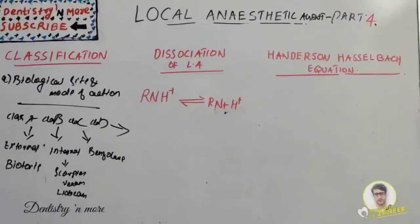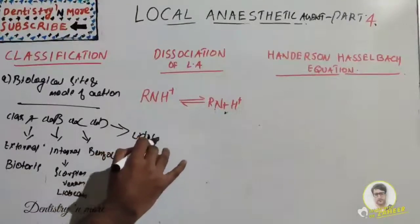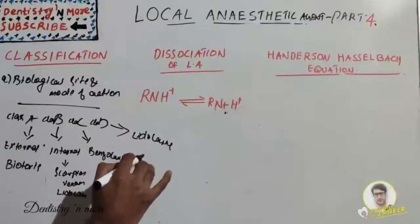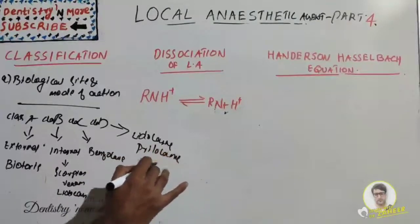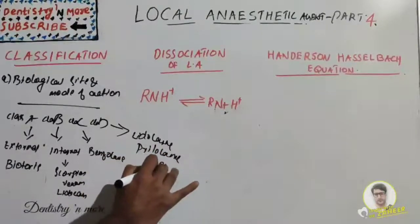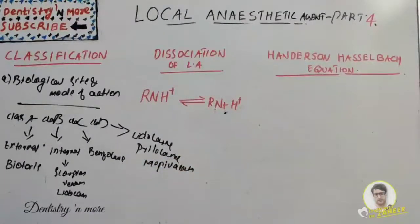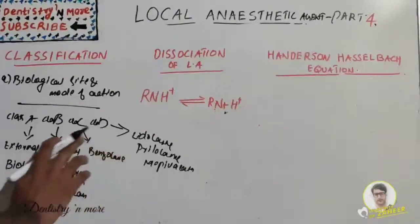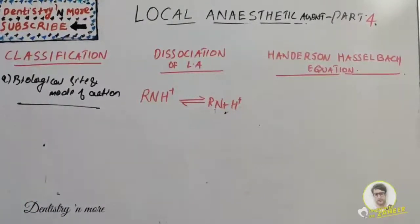Class D: agents acting by a combination of receptor and receptor-independent mechanisms. The most common examples are lidocaine (quaternary ammonium analogues), prilocaine, and mepivacaine. That covers Classes A, B, C, and D based on biological site and mode of action.